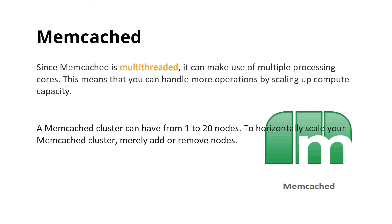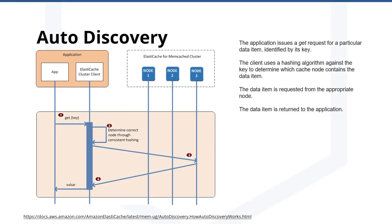Let's assume you have 20 nodes configured in your cluster and you give the endpoint URL to the user who talks to it. The application has the URL of the ElastiCache cluster client. It directly connects to the cluster client and asks for the value based on a particular key. The ElastiCache cluster client uses a hashing algorithm against the key to determine which cache node contains that particular data item. Based on that, the data item is requested from the appropriate node and returned back to the application. All the nodes are saved as metadata using the hashing algorithm.